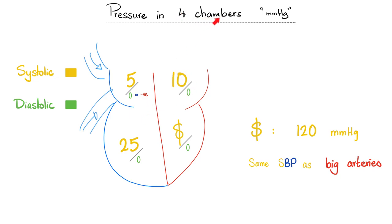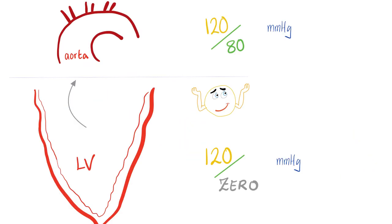So the pressures in the four chambers are: right atrium 5 over 0, left atrium 10 over 0, right ventricle 25 over 0, left ventricle 120 over 0. Notice the difference: in the big arteries (aorta) pressure is 120 over 80, but in the left ventricle it is 120 over 0. The systolic of 120 is the same, but the diastolic differs.